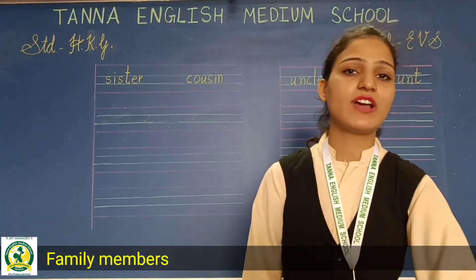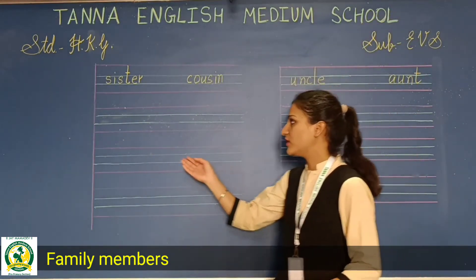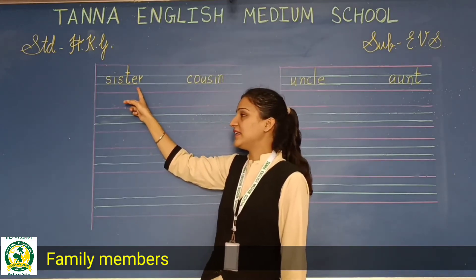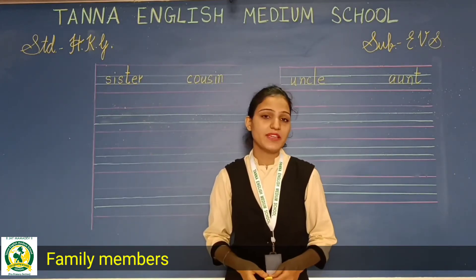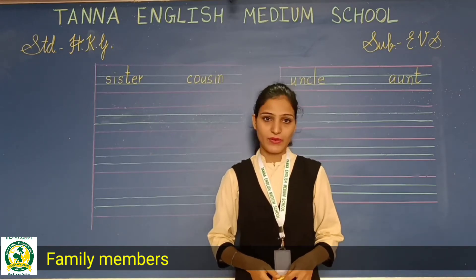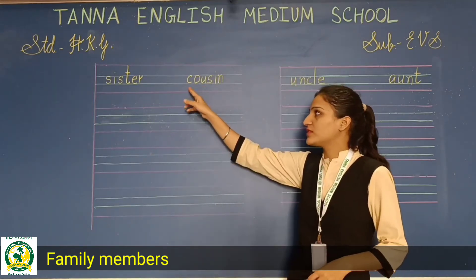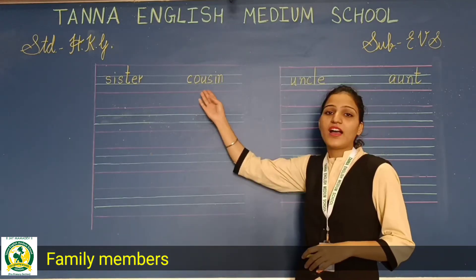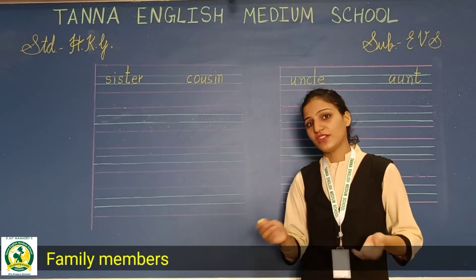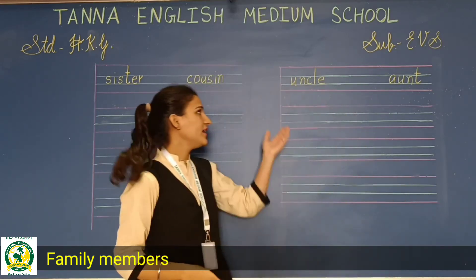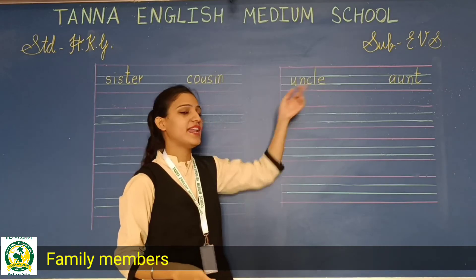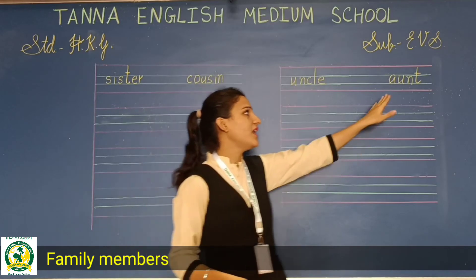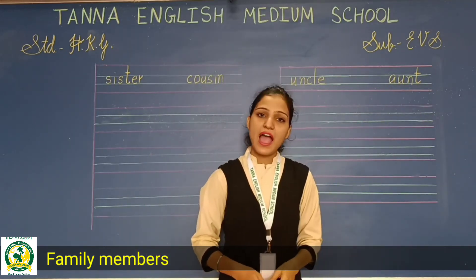Take out page number 12 in your EBS CW and look here. Sister — S-I-S-T-E-R. Sister means humari behen. Cousin — C-O-U-S-I-N. Cousin means uncle aur auntie ke jo children ho, woh humko cousin kehte hain. Then uncle — U-N-C-L-E, and aunt — A-U-N-T.